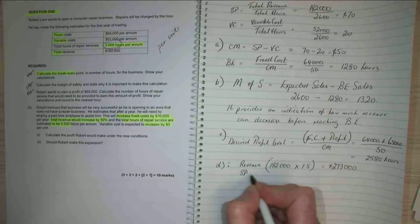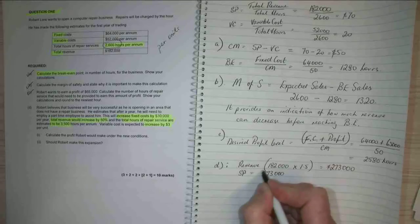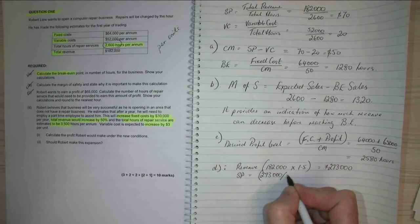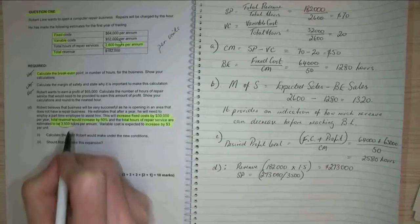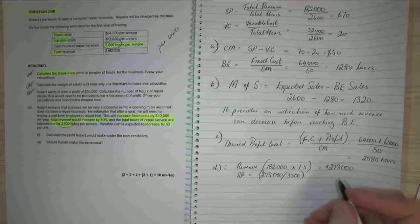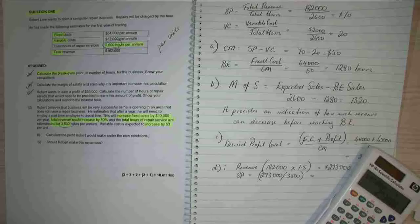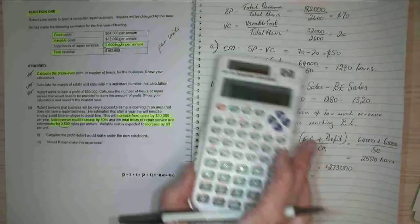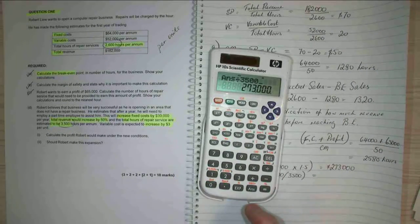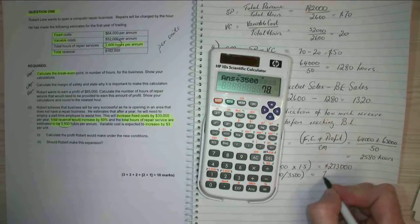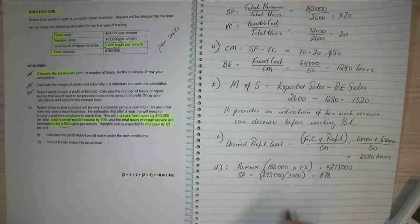And per unit, so selling price equals $273,000 divided by 3,500 hours. Divided by 3,500 equals 78. So I've got a new selling price of $78 per unit.